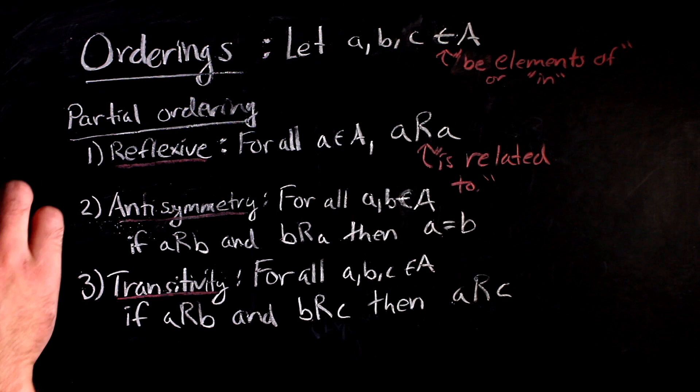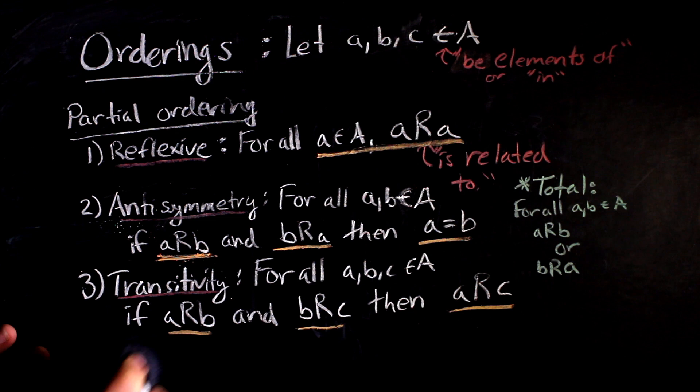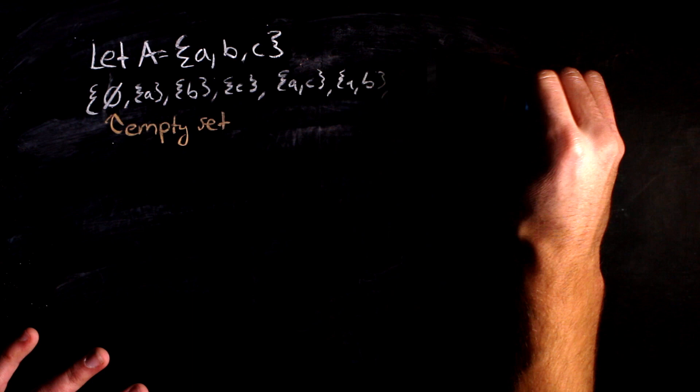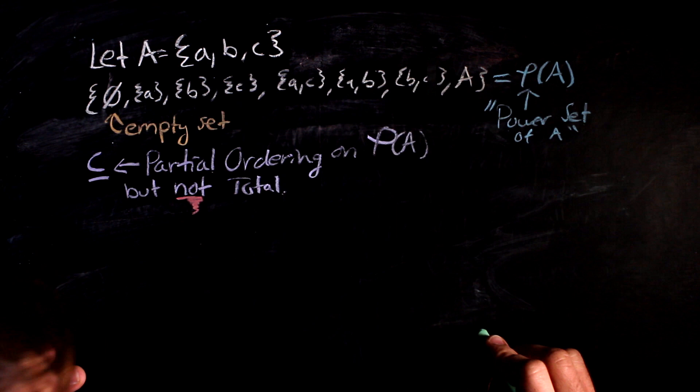A partial ordering is called a total ordering if every two elements of the set can be related in some way. Let's look at an example. So if we take the set of A, B, and C, and we take all subsets of that set, also called the power set, set inclusion is a partial ordering, but not necessarily a total ordering. This can be proven in general for any power set, but we will show it here for our particular case.